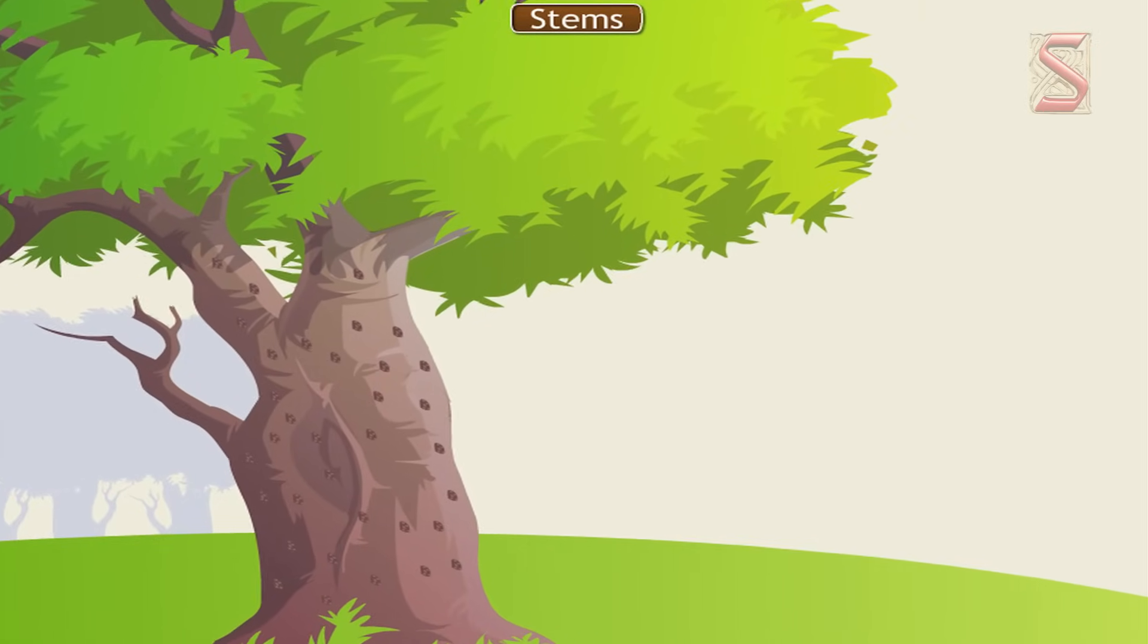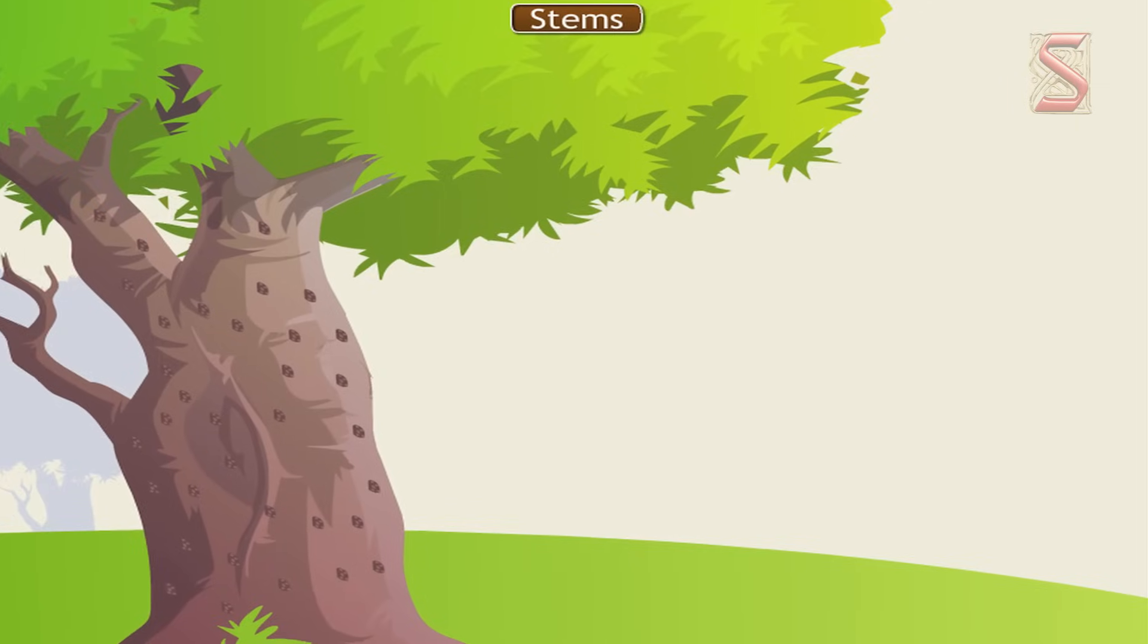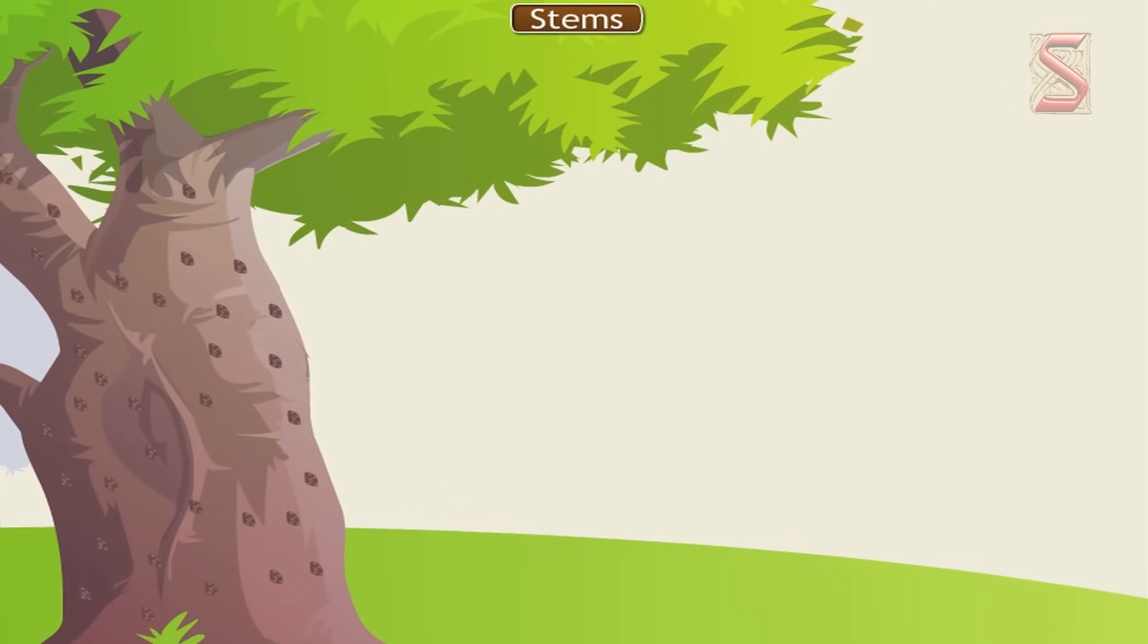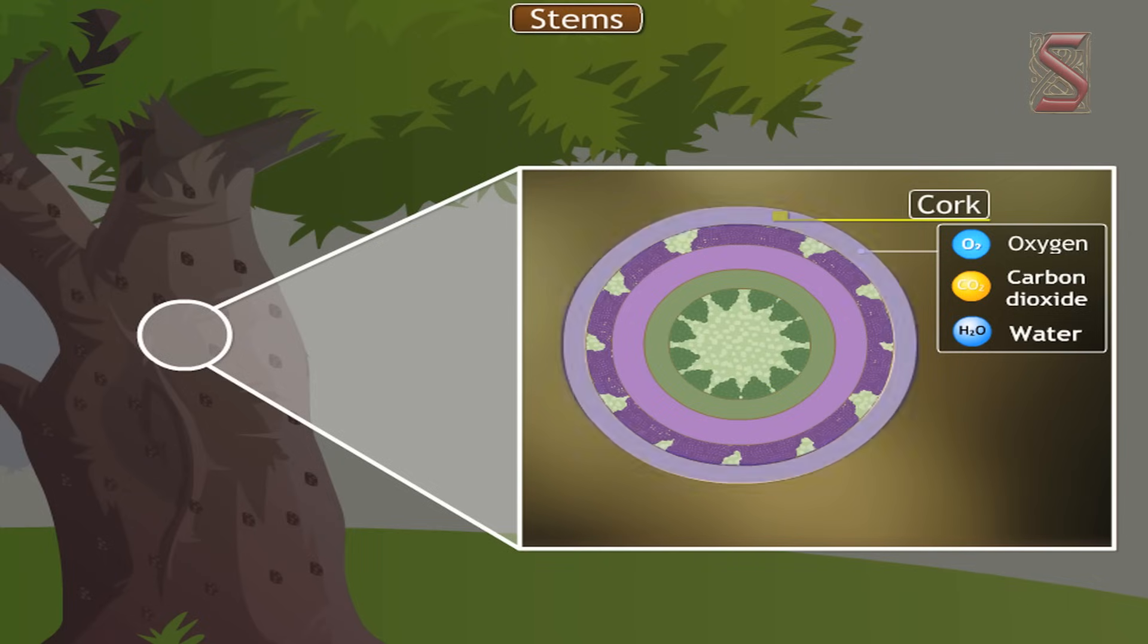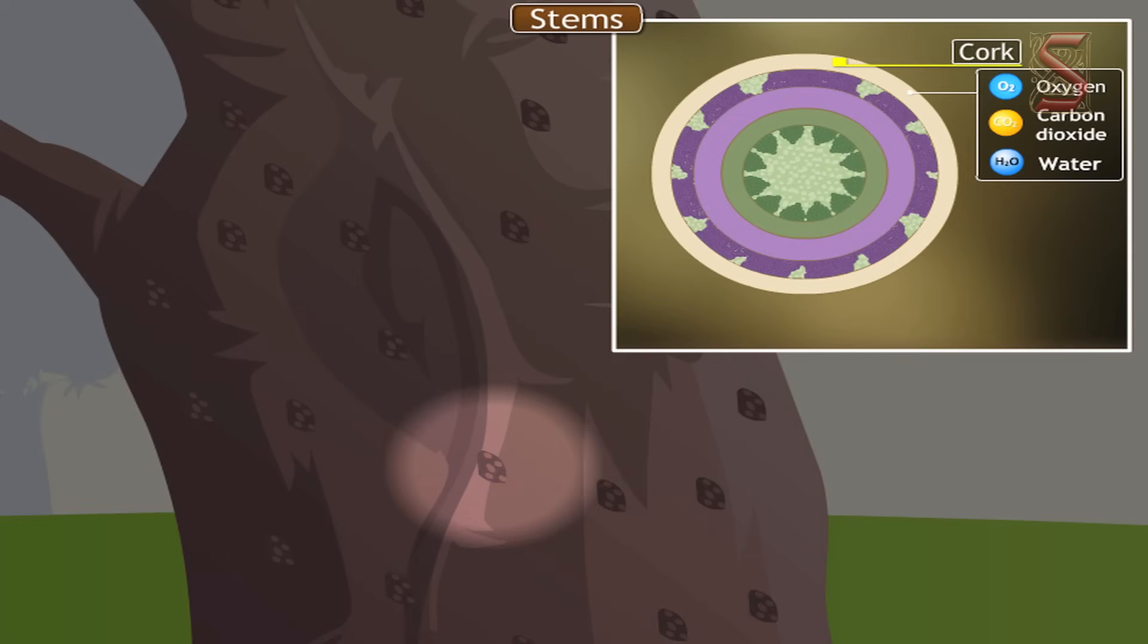Woody stems are covered with suberin, a waxy waterproof substance. So cork is as impervious to oxygen and carbon dioxide as it is to water. However, the cork of woody stems is perforated by non-suberized pores called lenticels. They enable oxygen to reach the intercellular spaces of the interior tissues and carbon dioxide to be released to the atmosphere.